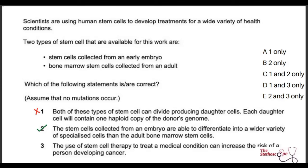Statement three says that using stem cell therapy to treat a medical condition can increase the risk of a person developing cancer. Cancer is uncontrolled replication of cells, so if injected stem cells continue dividing uncontrollably, we may end up with cancer. So statement three is also correct. Overall, statements two and three are correct.